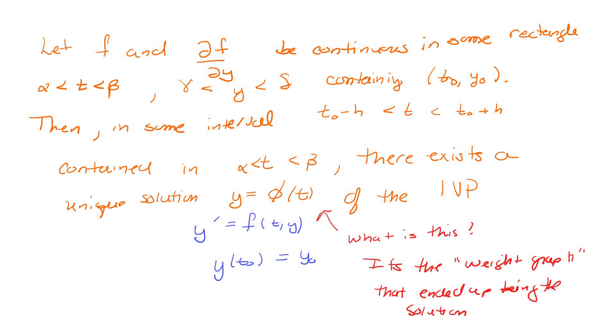And the solution, this thing here, that's like your weight trajectory. We usually use phi to stand for the trajectory. So there's more notation. So they're distinguishing that from the Y of T that's the unknown in the equation to the Y of T that you get as a solution.